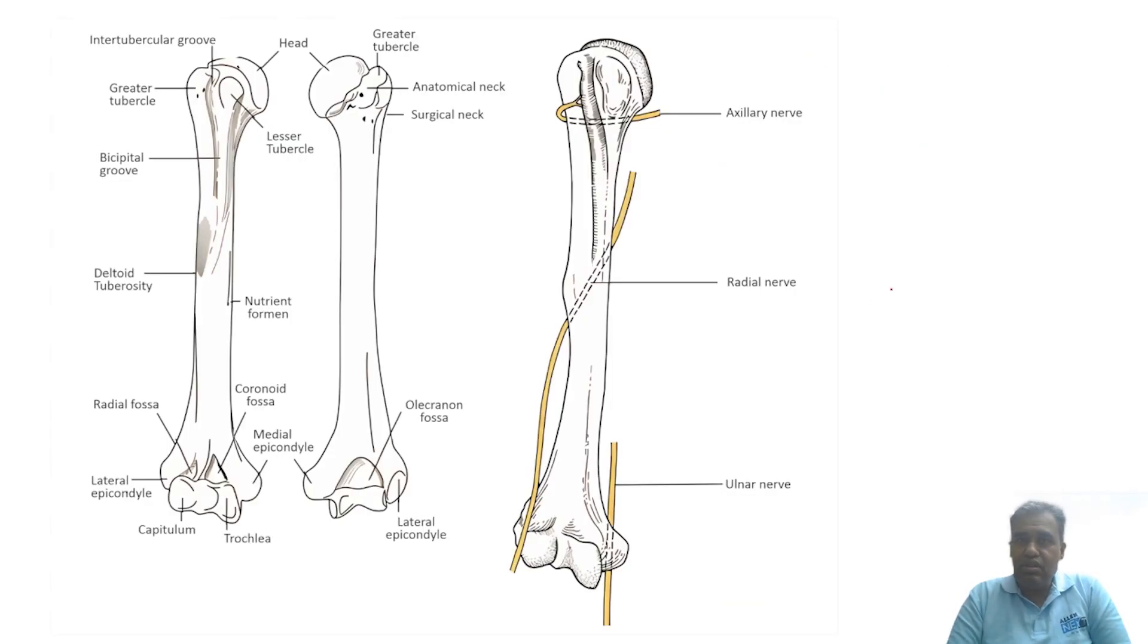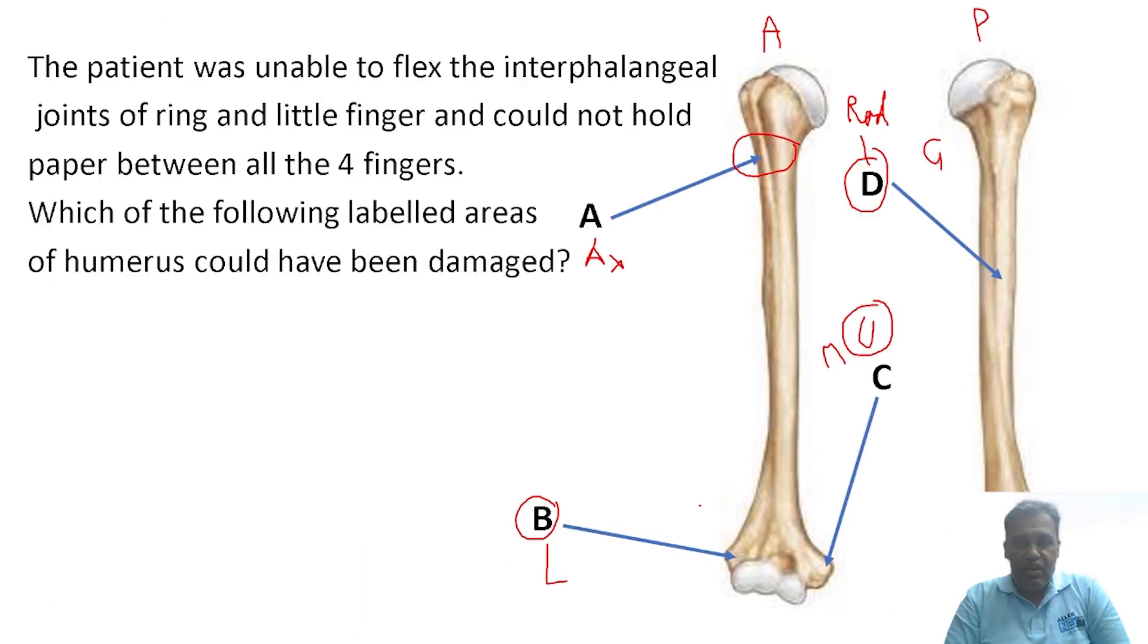We've discussed this many times in our classes. This image shows the humerus and three nerves closely associated with periosteum: the axillary nerve on the surgical neck, the radial nerve in the radial groove behind, and the ulnar nerve passing behind the medial epicondyle. You can feel it also. The answer is option C.